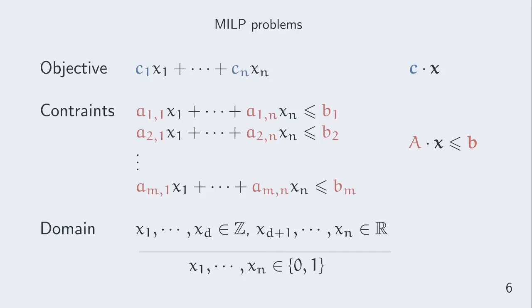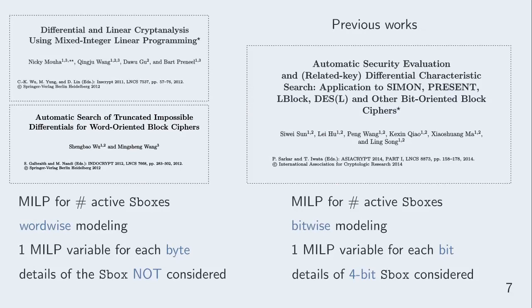So what have cryptographers done with MILP modeling so far? First, Mouha, Wang, Wu and Preneel, and Wu and Wang used it to compute lower bounds on the number of active S-boxes with word-wise modelings. This means their modelings used one binary variable for each word, modeling whether this byte was active or not. Of course, such modelings are restricted to word-oriented ciphers and do not take the details of the S-boxes into account.